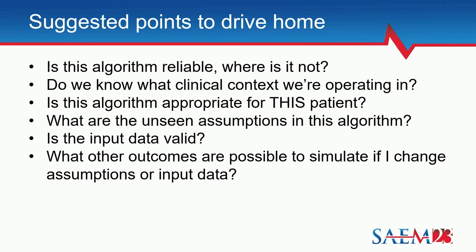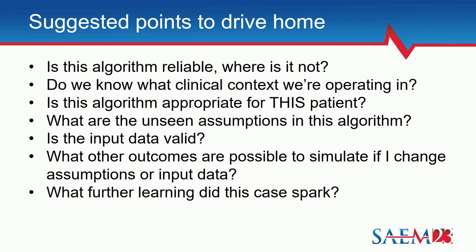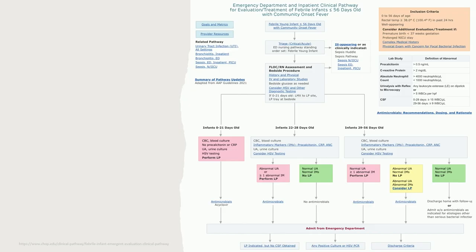What other outcomes are possible to simulate? I love doing this with trainees as well — putting them in a situation with a patient, then giving a slightly different patient in that same situation. How would this algorithm react differently? Where is it going to break down? What is the edge case? And where along this algorithm are you tripping up, so we can jump off and have a discussion about it? That doesn't have to be a 30-minute discussion — it can be a two-minute discussion about why we're doing particular things.